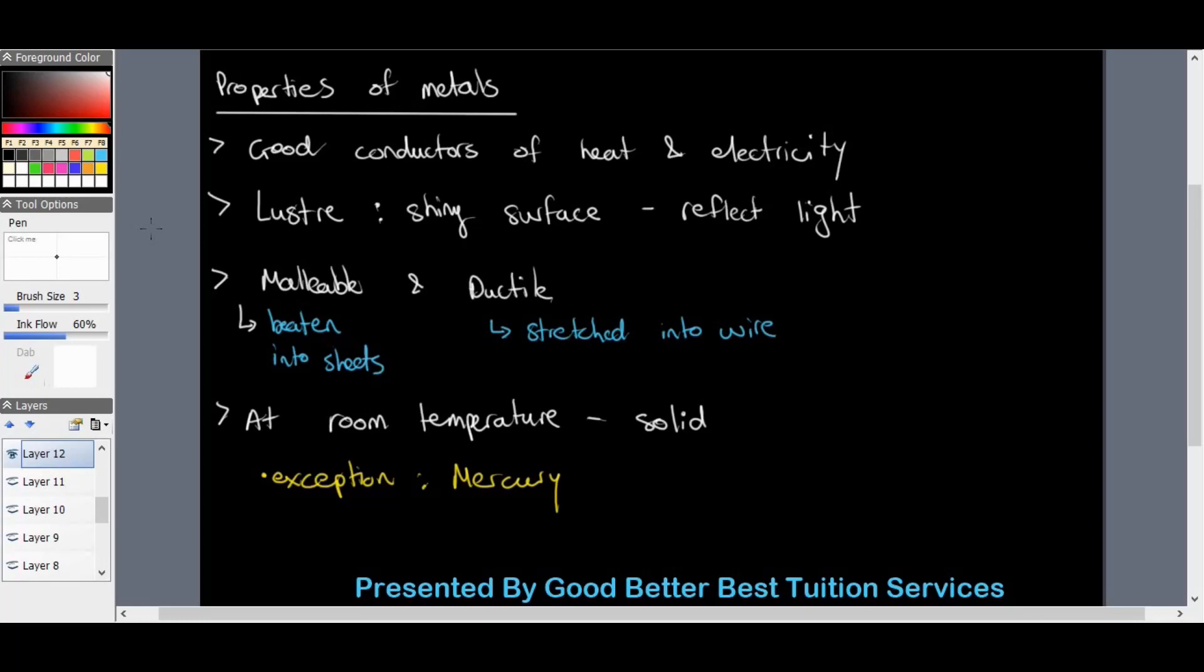At room temperature metals are very solid with the exception of mercury which is a liquid metal at room temperature and we find mercury in thermometers.